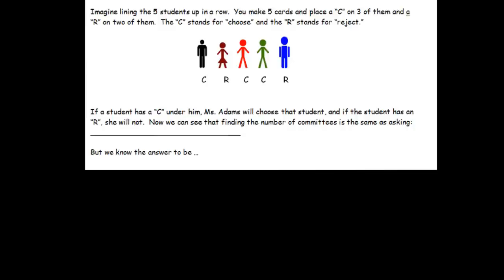If you view it like that, here's one particular arrangement right here. This would mean pick the first person, not the second, pick the third and the fourth, and not the fifth. All the number of ways to arrange those C's and R's should give me the number of ways to form the committee.